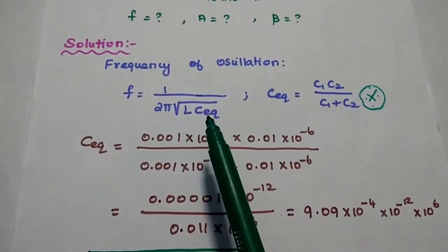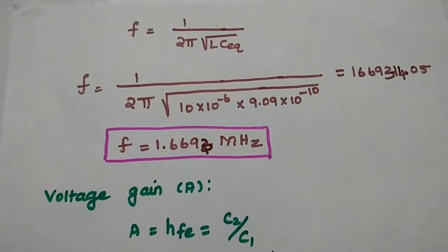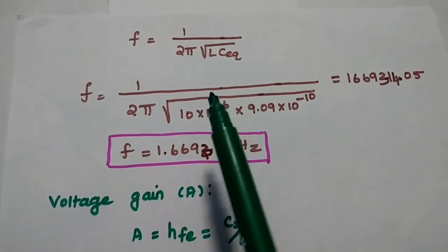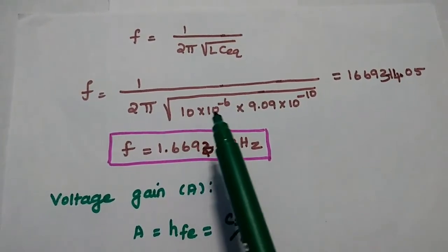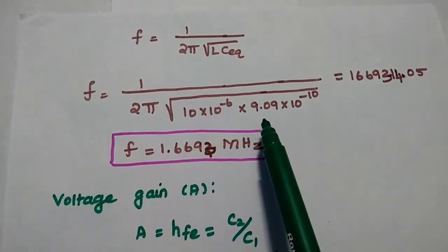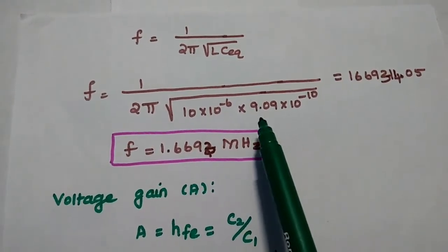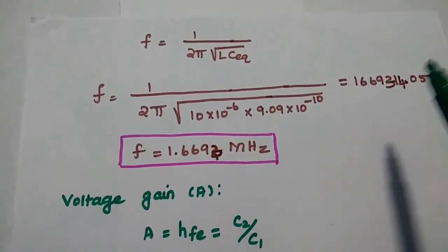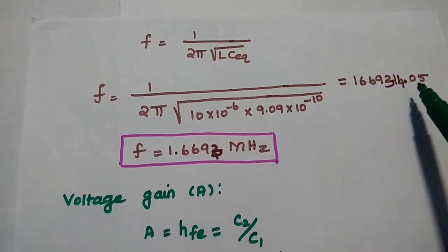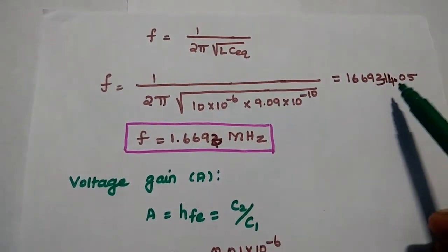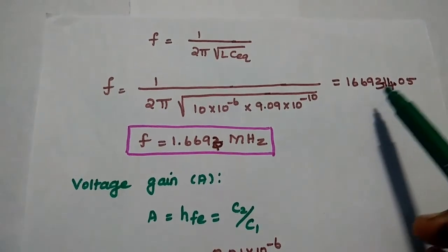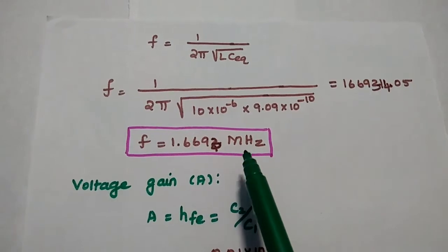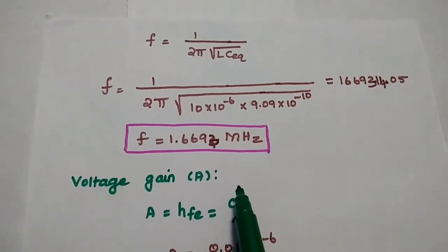We substitute that value in the formula: F = 1 / (2π √(L × C_equivalent)), where L = 10 microhenry = 10 × 10⁻⁶, and C_equivalent = 9.09 × 10⁻¹⁰. We get the answer as 1,669,314.05 Hz. Moving the decimal point 6 digits, we can write that value as 1.6693 MHz.